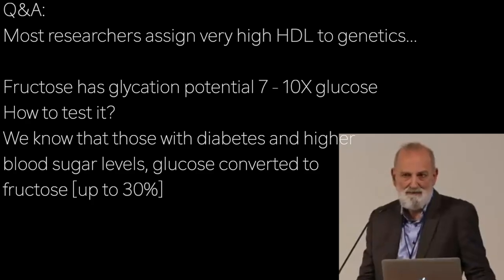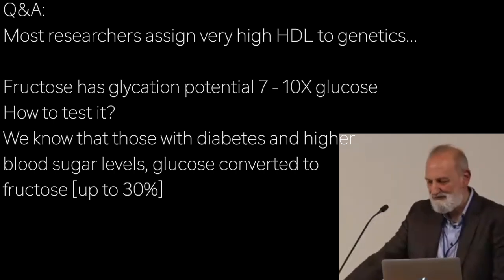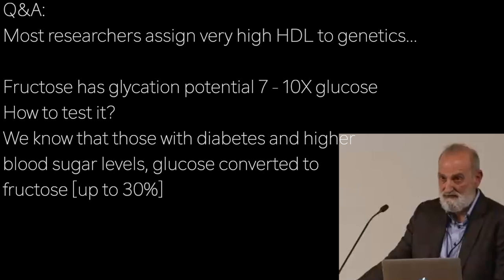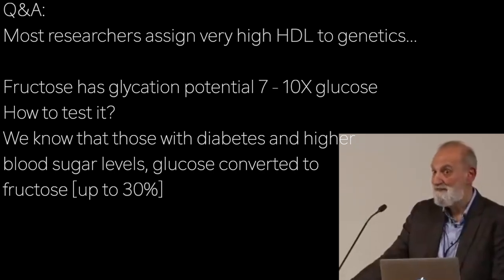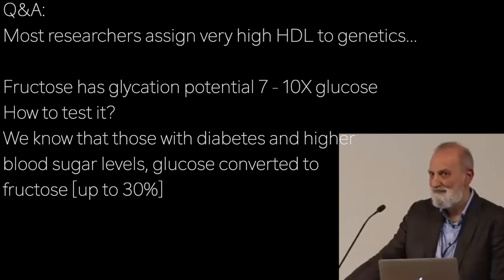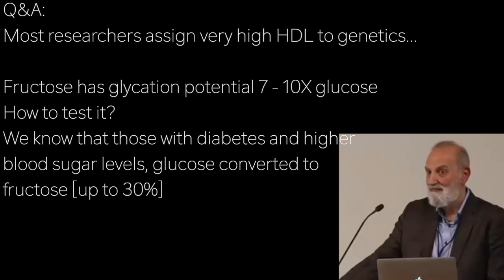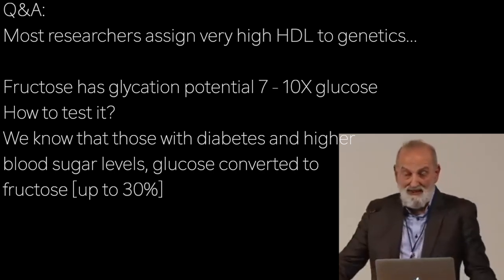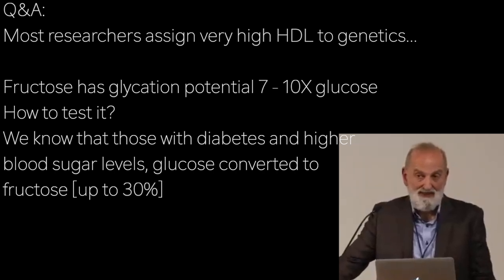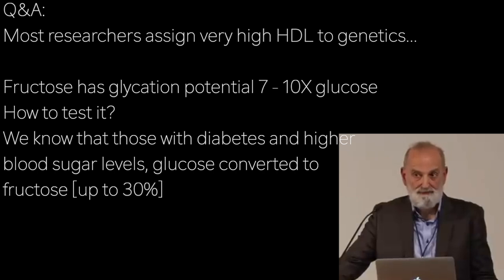Somebody asked me yesterday about glycation from fructose. We know that fructose has a glycation potential 7 to 10 times greater than glucose. The question was, how do we test it in pathology? I know it might be reflected slightly in HbA1c, but the dominant influence on HbA1c is glucose. Is there any test we have for fructose glycation, especially considering that people who have diabetes and higher blood sugar levels have a pathway that converts glucose to fructose — it's called the polyol pathway — and that can convert up to about 30% of glucose to fructose.